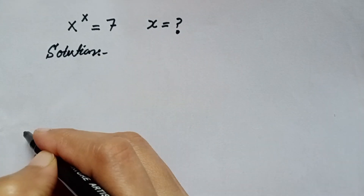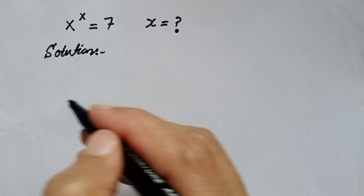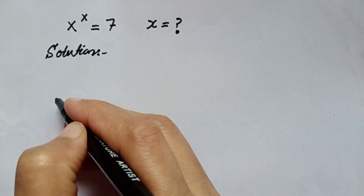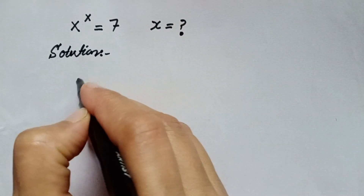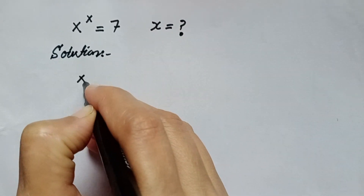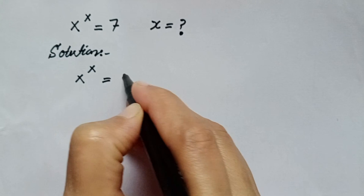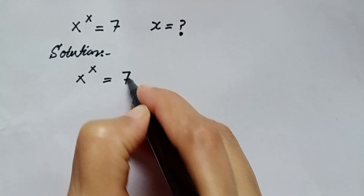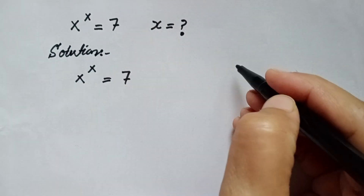Hello everyone, welcome to Brain Equation. To solve the equation x to the power x is equal to 7, first we will write the expression x^x = 7.